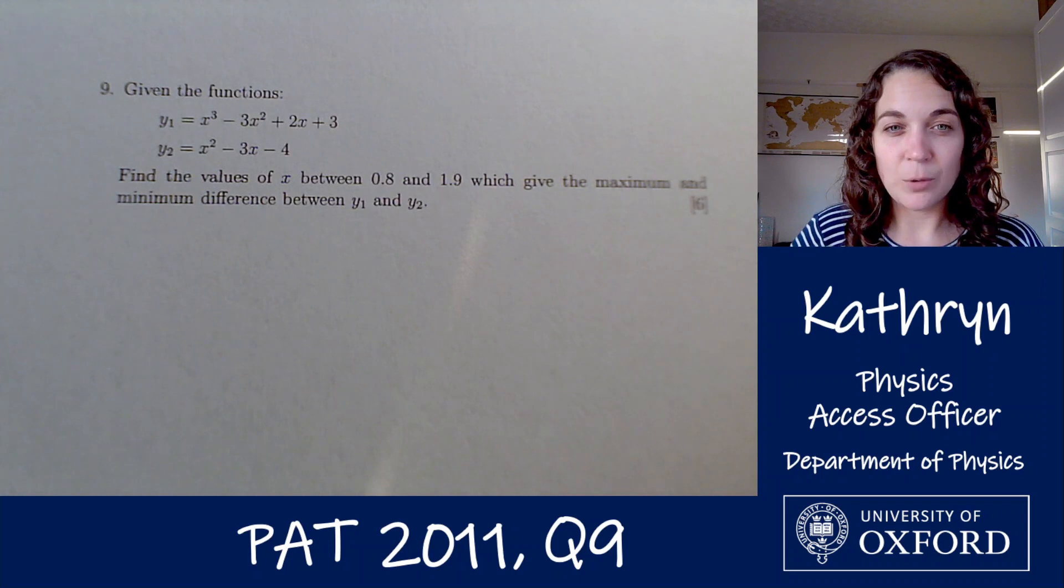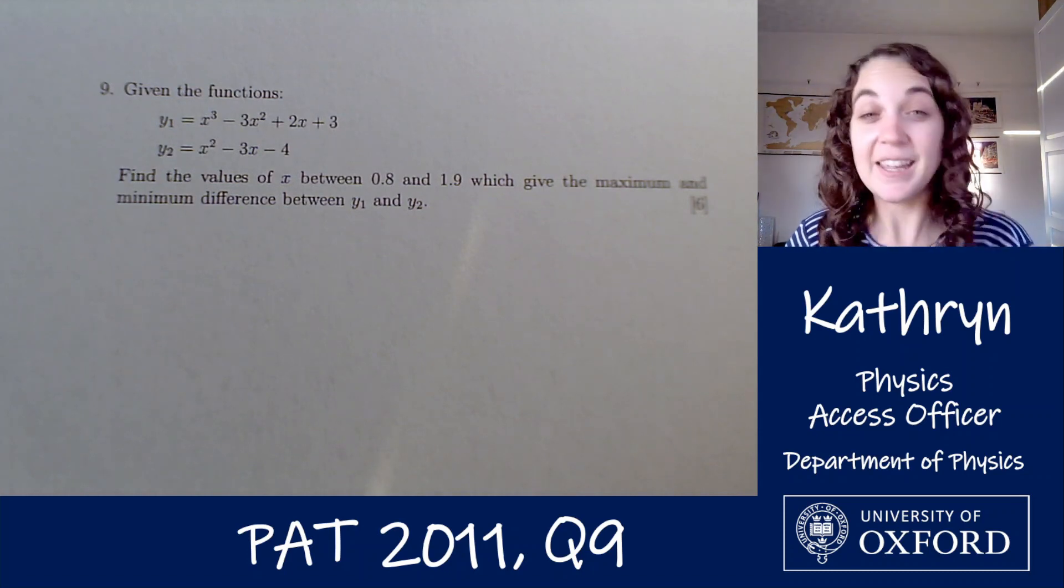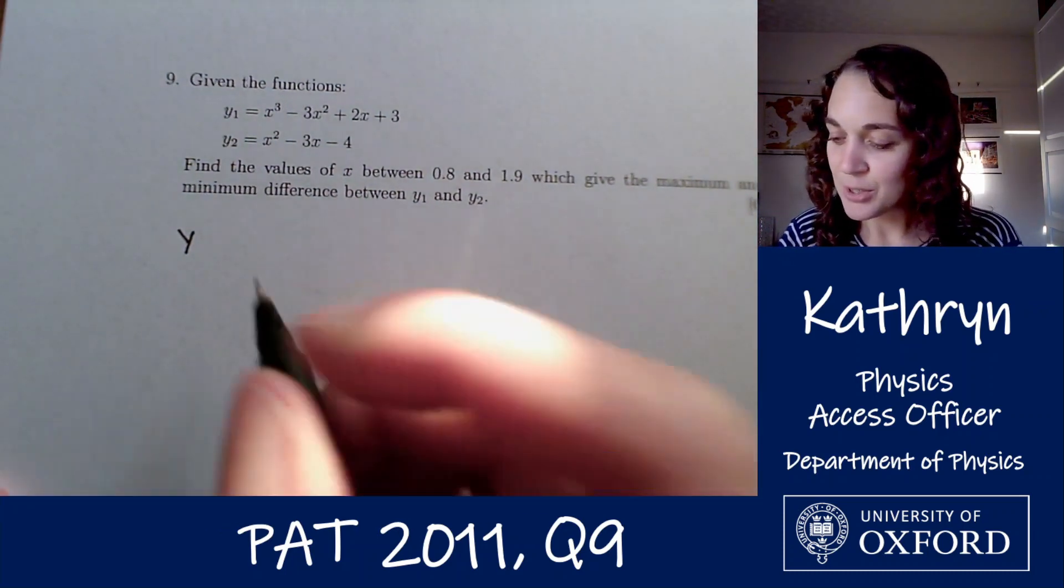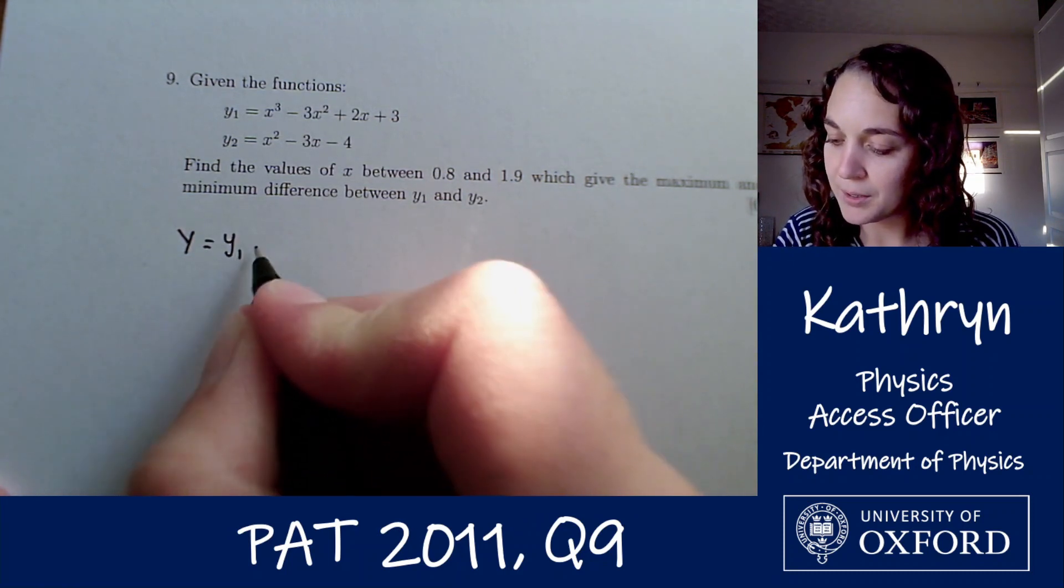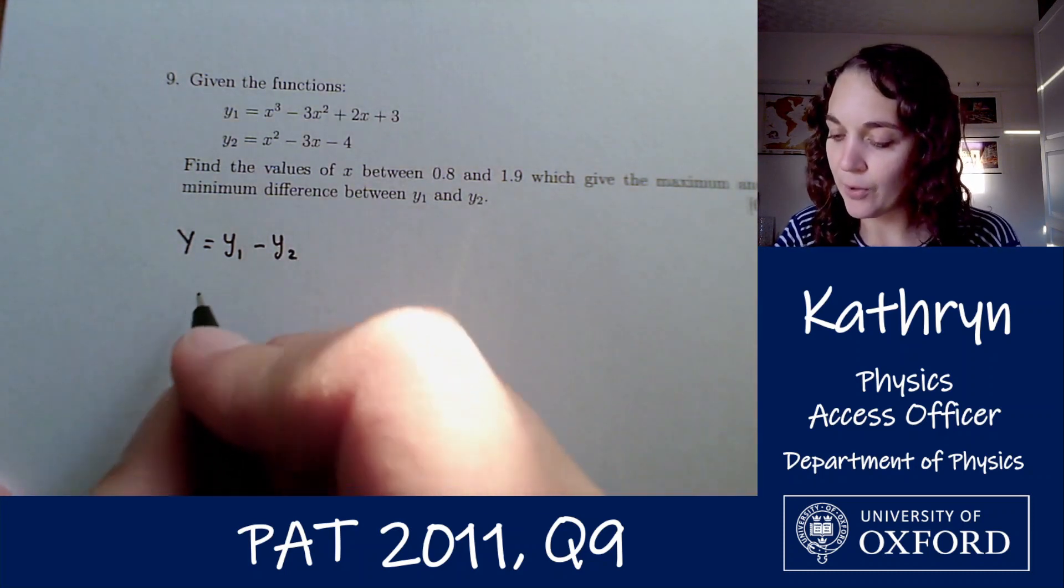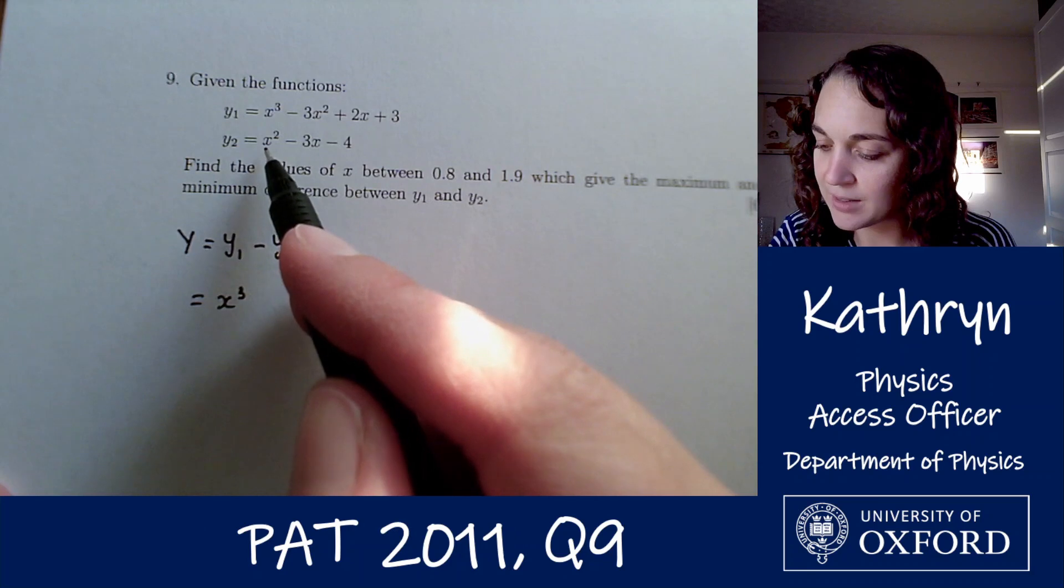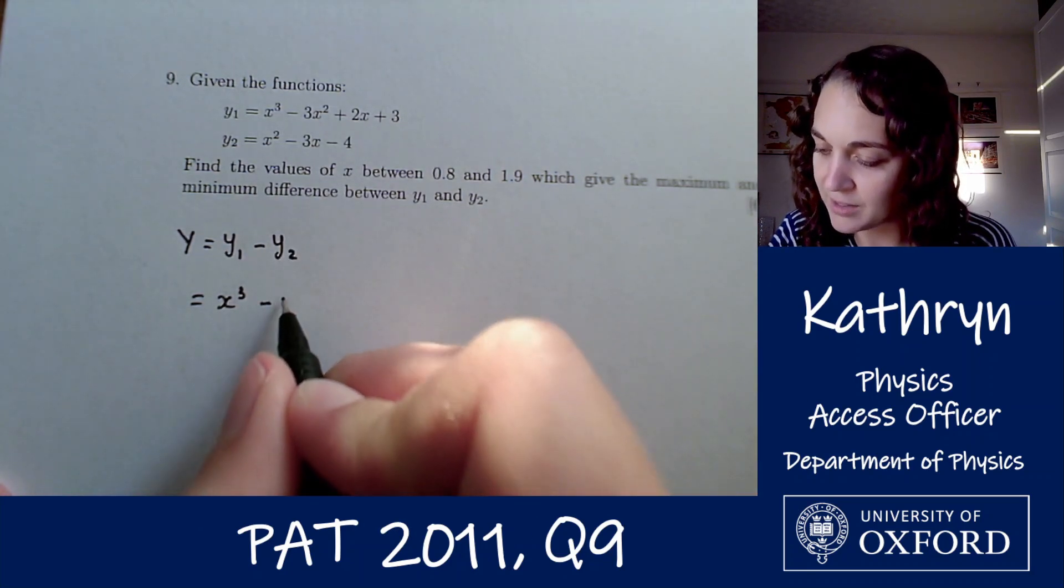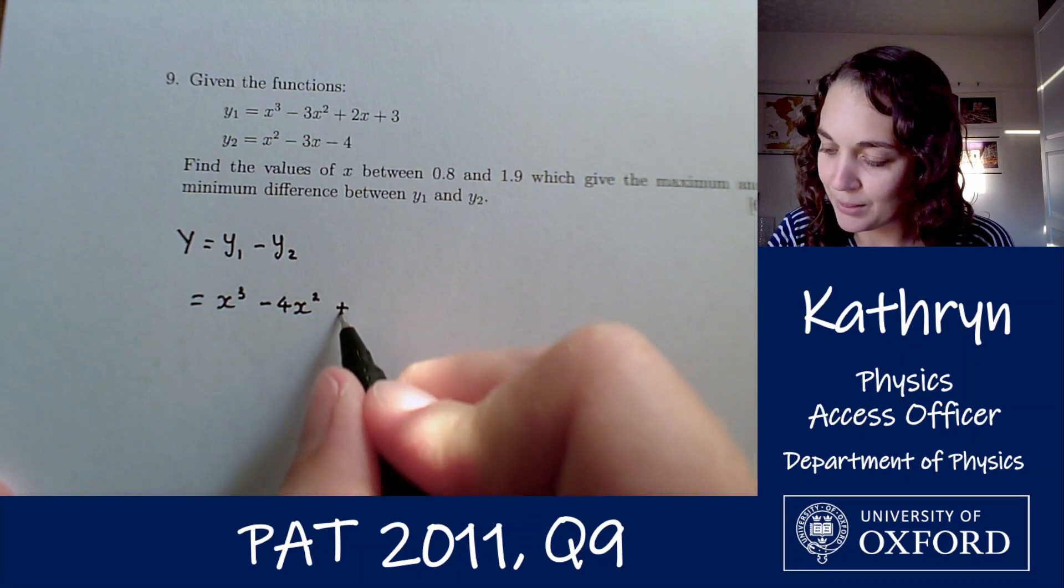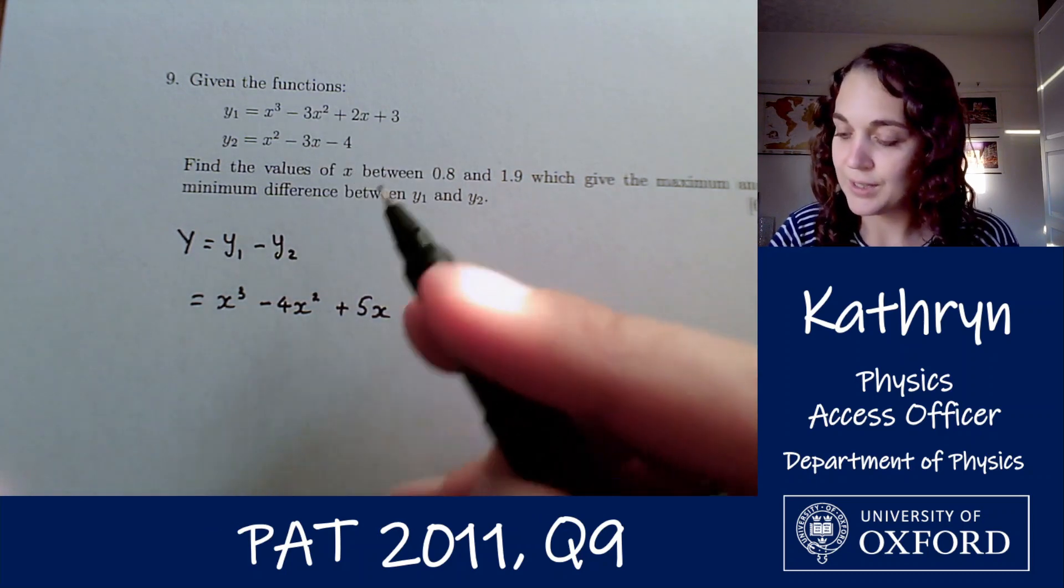So the way I'm going to do this is I'm going to set up a new function that is the difference between y1 and y2, so I'm going to call that big Y. So big Y equals y1 minus y2. So big Y equals x cubed minus 4x squared plus 5x plus 7.